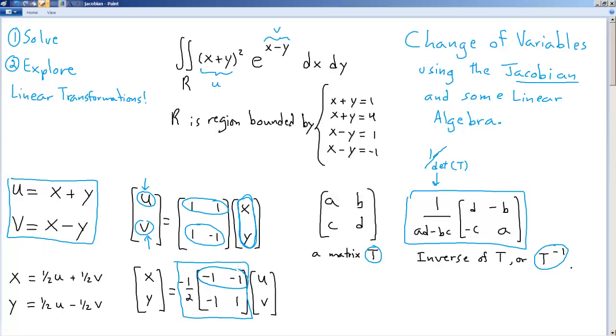This first row times this first column, right? Negative 1 times u, negative 1 times v, all of that multiplied by negative 1 half, because of this constant out here, gives us 1 half u plus 1 half v equals x.